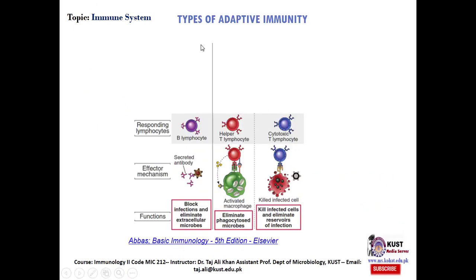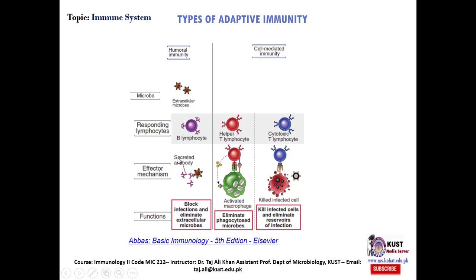There are two types of adaptive immunity: humoral immunity and cell-mediated immunity. When extracellular microbes interact with B cells, B cells secrete antibodies that block infection and eliminate the extracellular microbes. Cell-mediated immunity is provided by helper T cells and cytotoxic T cells, and both these cells eliminate intracellular pathogens.